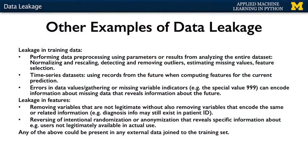Leakage in features includes the case where we have a variable like a diagnosis ID in a patient record that we remove, but neglect to also remove other variables, known as proxy variables, that contain the same or similar information. The patient ID example — where the ID number had clues about the nature of the patient's diagnosis due to the admission process — was an example of this.